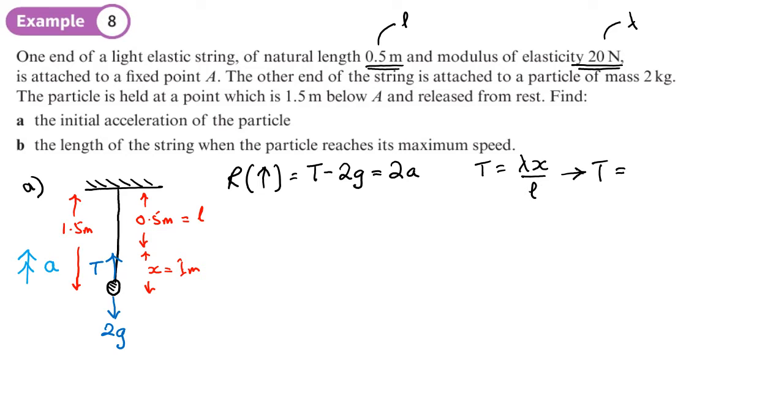So that will be equal to 20, that's lambda, times by x, which is 1, that's the extension, divided by the natural length, which is 0.5. So T is 40, 40 newtons.